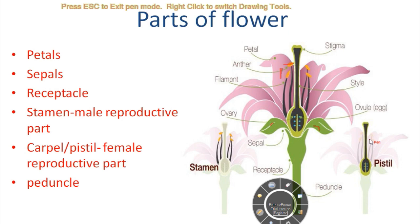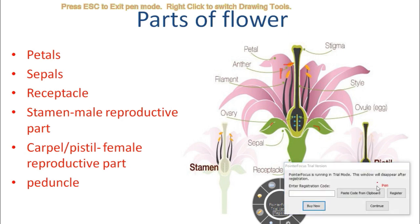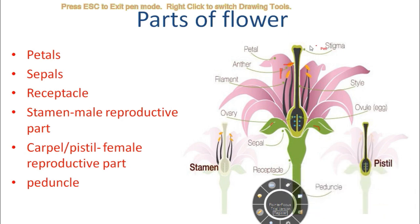The pistil is the female reproductive part, which has four different parts. This broad portion is the stigma. This long portion is the style, and it turns into a broad portion known as the ovary. The ovary contains the ovule, which is also known as the egg — it is the female gamete.